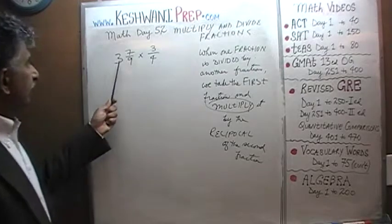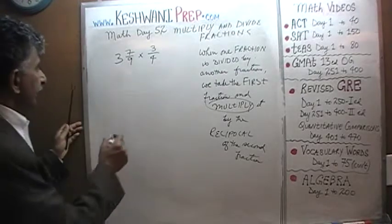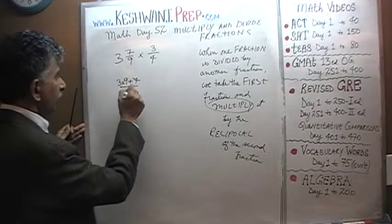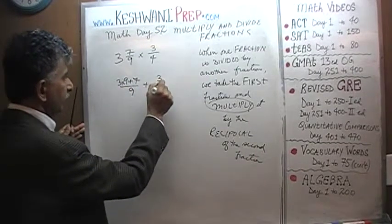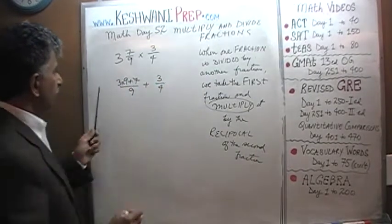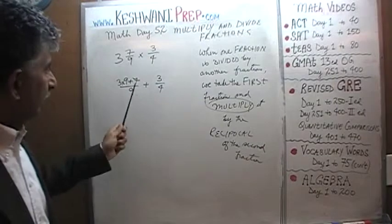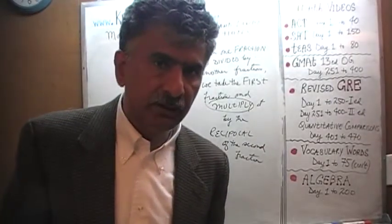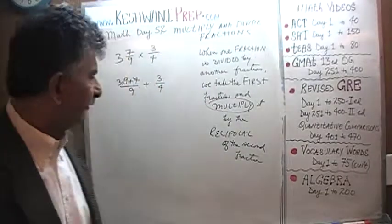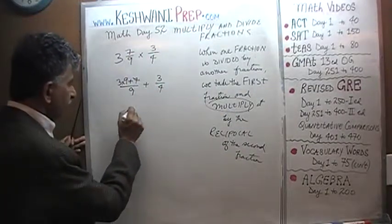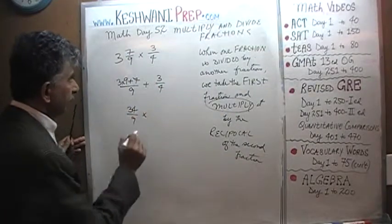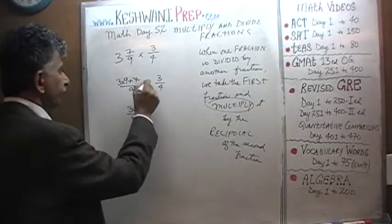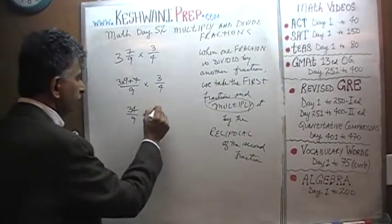Let's do them, shall we? 3 and 7/9 can be written as (3 times 9 plus 7) over 9, times 3/4. 3 times 9 is 27. 27 plus 7: 27 plus 3 would be 30 and one more would be 34. So we end up with 34 over 9 times 3/4.